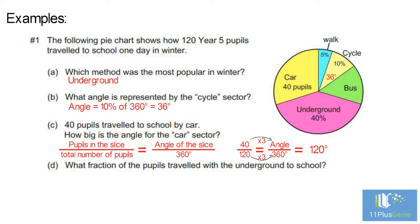D. What fraction of the pupils travelled with the underground to school? The whole circle represents 100%. The fraction for the underground is 40 over 100, which simplifies to 2 fifths.